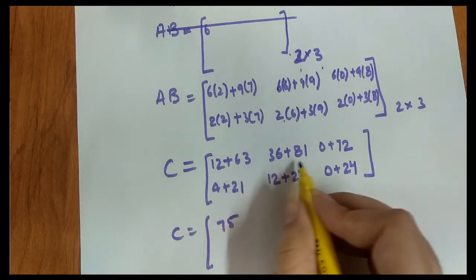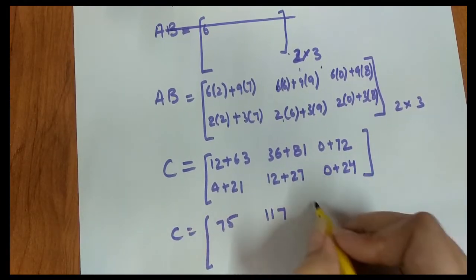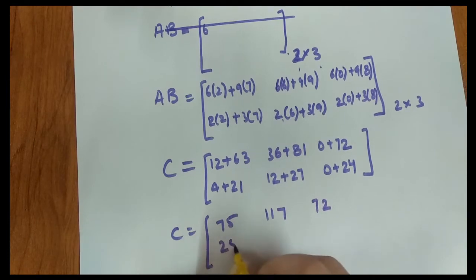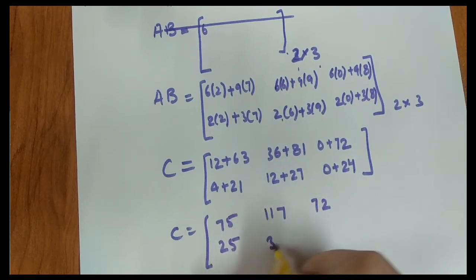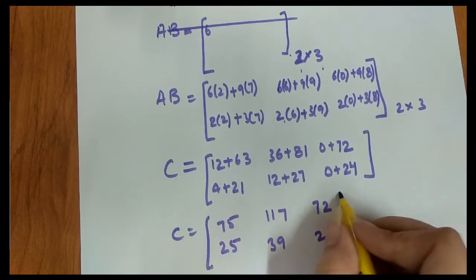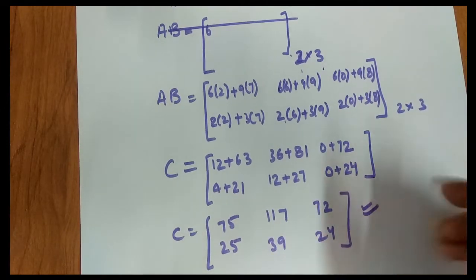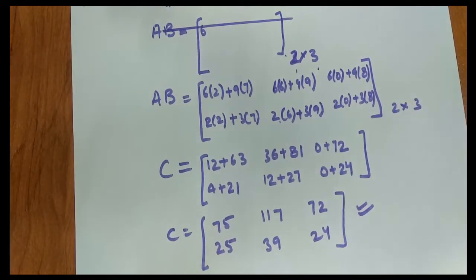Now calculate, just add them. It's 75, 117, 72, 25, 39, and 24. This is the multiplication of matrix A and B.